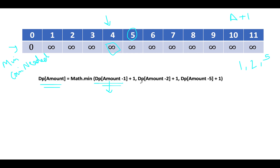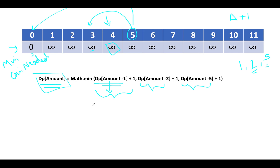The second possibility: since we have denomination 2, we go two steps back to dp[amount minus 2], check its value, and add 1. The third possibility: since we have denomination 5, we go five steps back to dp[amount minus 5], take its value, and add 1 — because we can use the coin of denomination 5 to reach that total from that position. Out of these three possibilities, the minimum one becomes the final value for dp[amount].